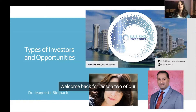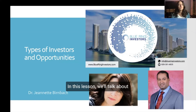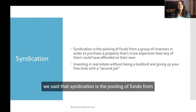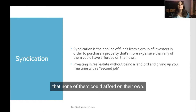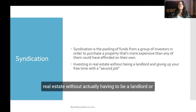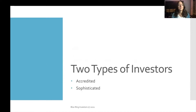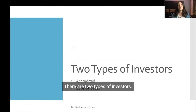Hey everyone, I'm Janet Bernbach. Welcome back for lesson two of our crash course in real estate syndication. In this lesson we'll talk about types of investors and opportunities. In the first lesson we looked at syndication in general — the pooling of funds from a group of investors to purchase a property that none of them could afford on their own, so you can get into real estate without being a landlord or managing your own properties. There are two types of investors: accredited and sophisticated.